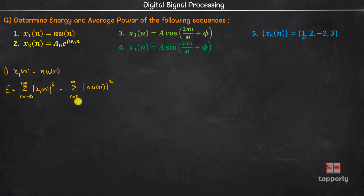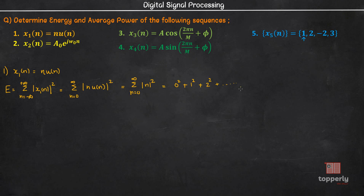Here the summation start is changed to n = 0 because u(n) is 0 for n less than 0. So this summation becomes Σ(n = 0 to ∞) |n|² because u(n) is 1 for all n ≥ 0. So this becomes 0² + 1² + 2² + ... which will be infinity.